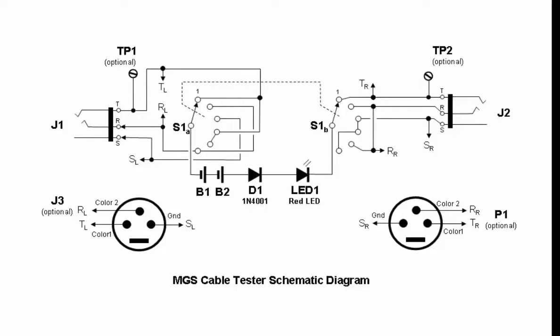So here's the schematic diagram for the tester. It includes the TRS or stereo jacks, the batteries, the diode, the LED, and the switch. And it also includes some optional items: an XLR jack and plug, and two additional test points so you could use this device for general continuity testing.